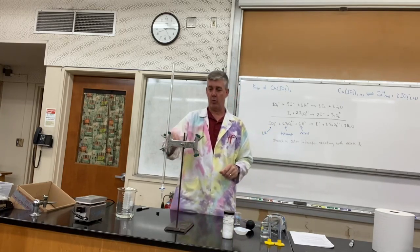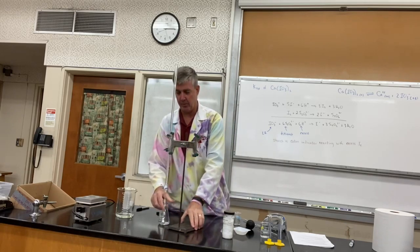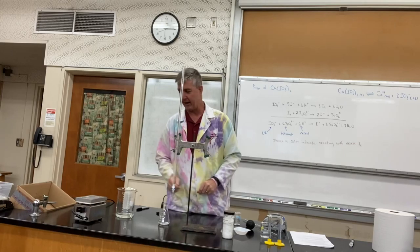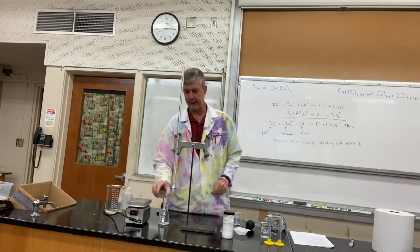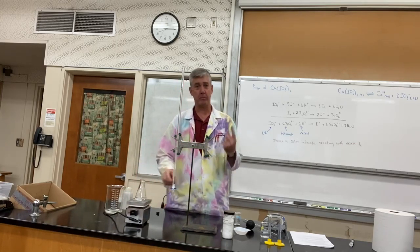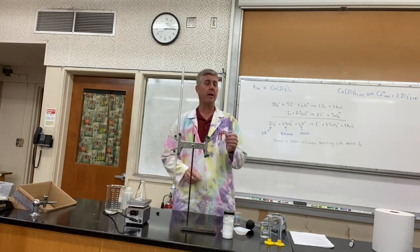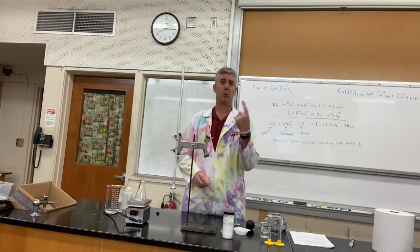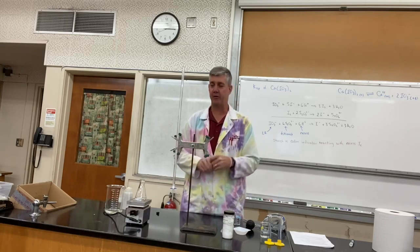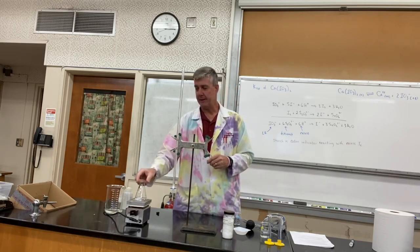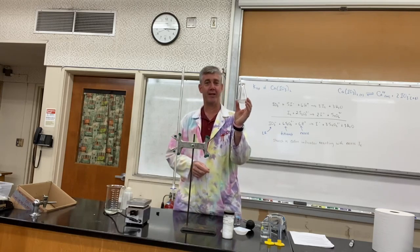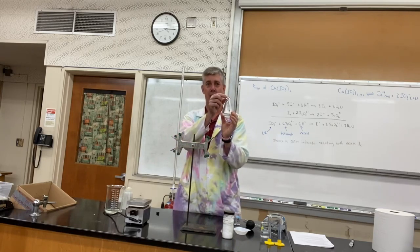The calcium iodate that we're going to be measuring, we want 10.00 mils. We want a lot of precision on that. So what we're going to do is use our 10 mil volumetric pipette. We've done that before, so we've got our pipette bulbs and our 10 mil pipette. We're going to pipette in 10 mils into our reaction flask.